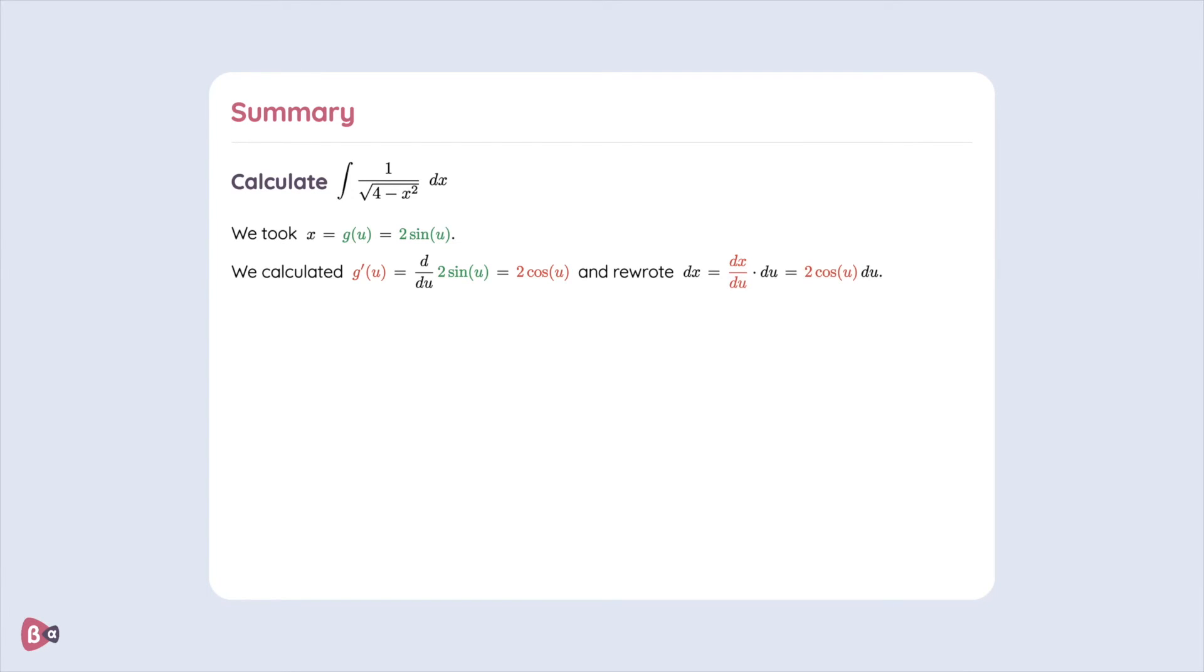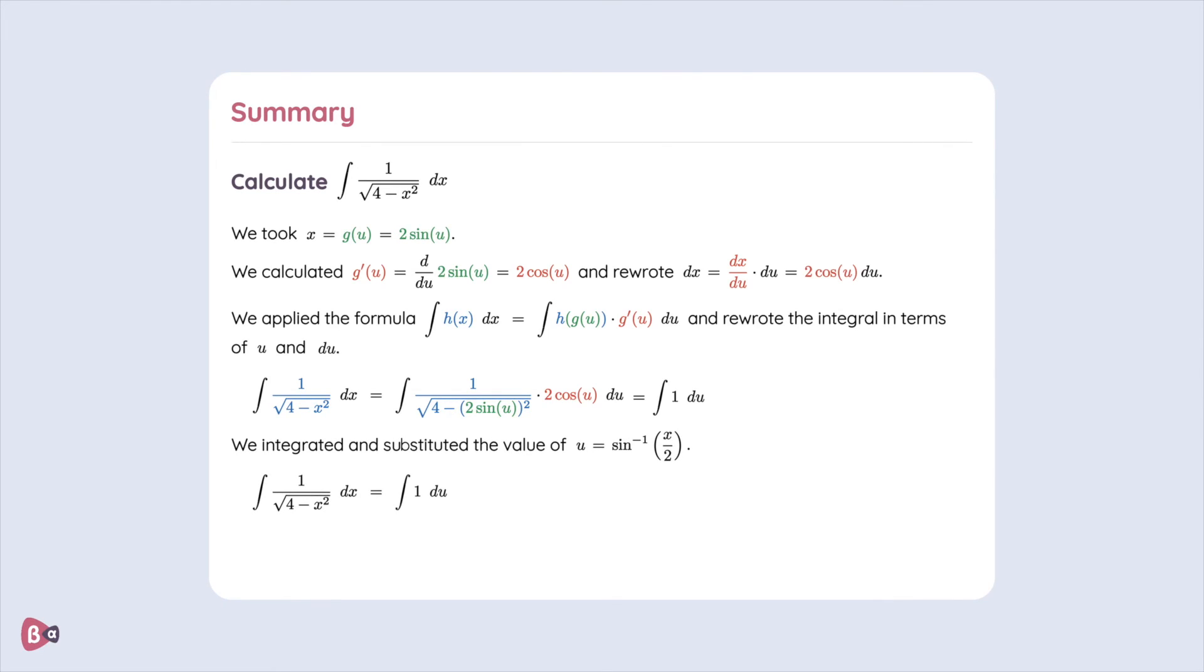And we rewrote dx in terms of du. We found that it is equal to 2 times cosine of u du. We took our formula from the beginning and inserted all the variables inside of it. We integrated and substituted the value of u giving our final answer, that is, the integral of 1 over square root of 4 minus x squared equal to sine inverse of x divided by 2 plus c, where c is the integral constant.